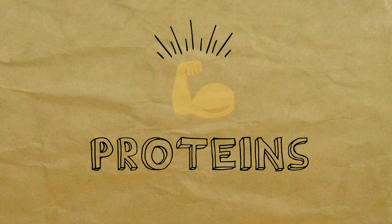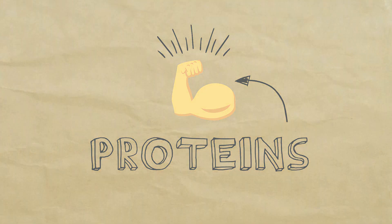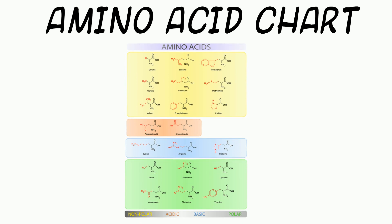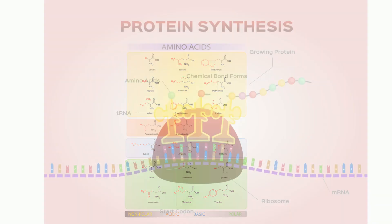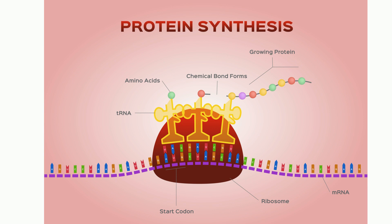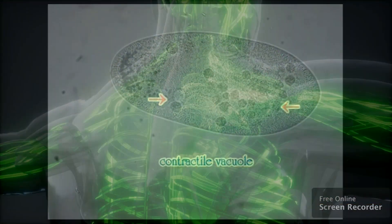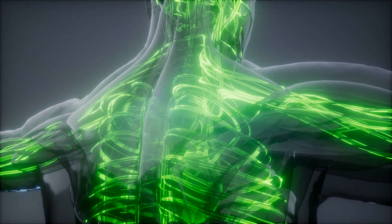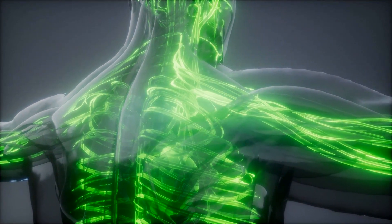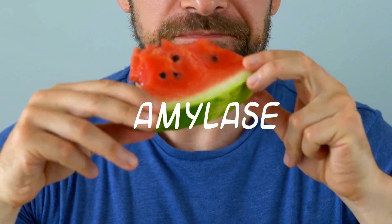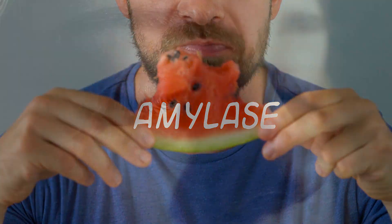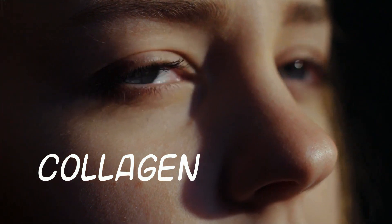Proteins are large chains of amino acids. There are 20 amino acids used in your body. Your RNA carries instructions to the ribosome, which instructs the ribosome the correct order of the amino acids. These proteins carry out many jobs in the cell. Your body has hundreds of proteins — some help with communication, others with transportation. For example, the protein amylase, which is found in your saliva, helps break down food. Collagen is a protein that helps bind your skin together.